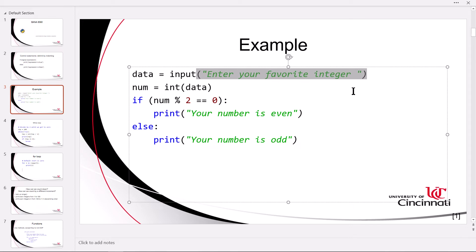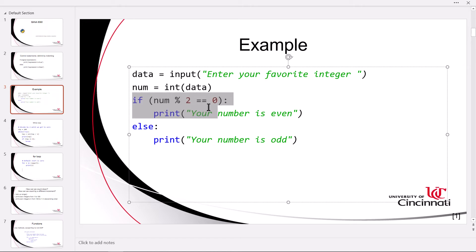Then it attempts to convert data to an int. We learned in a previous video that everything typed in from the keyboard is a string, therefore if we want to do math on that we have to convert it to some numeric type such as int. After the data conversion takes place, we examine that newly minted integer.